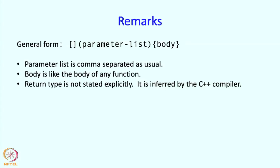Now the return type is not stated explicitly. So in a usual function, the return type will be stated and in this case, the C++ compiler looks at the return statement and says, oh, the return statement is inferring this type of value and therefore, the return type of this function must be this. Sometimes it is not possible to infer the type and in that case, you can specify it explicitly.